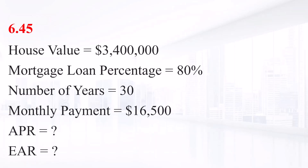You have just purchased a new warehouse. To finance the purchase, you have arranged for a 30-year mortgage loan for 80 percent of the 3.4 million purchase price. The monthly payment on this loan will be 16,500. We need to find the APR, the effective interest rate, and the effective annual rate. We are finding the interest rate for annuity cash flows, given the present value of the annuity, number of periods, and the amount of the annuity. Note that the present value of the annuity is not the amount borrowed.